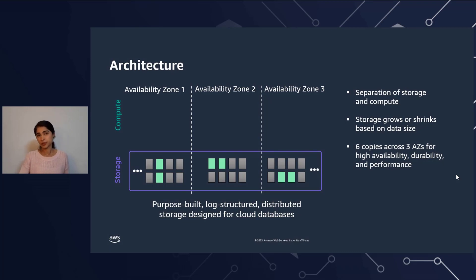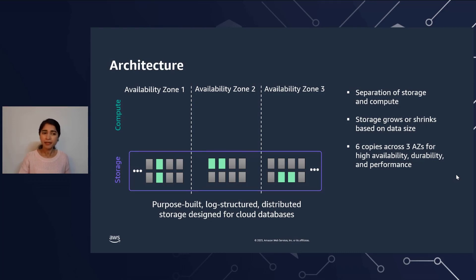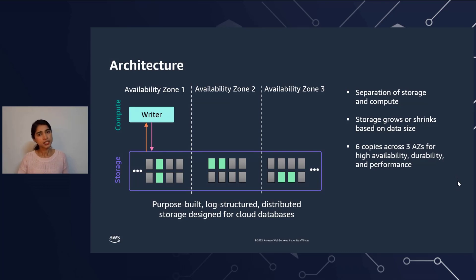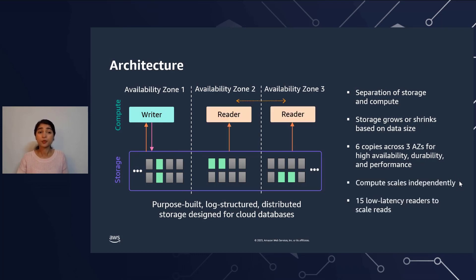If the whole availability zone goes out, for example, we still have four other copies. So this is how we ensure that you get high availability, durability, and performance. Talking about compute, if you have a single availability zone deployment, you have a writer node which is connected to your storage node with read and write intent. It also gives you the capability to deploy up to 15 read replicas to be able to scale your reads.